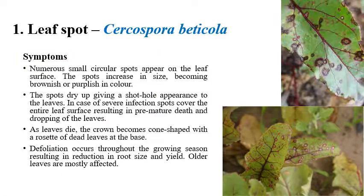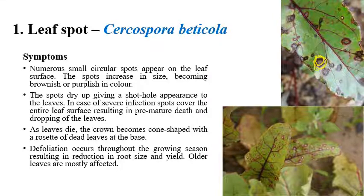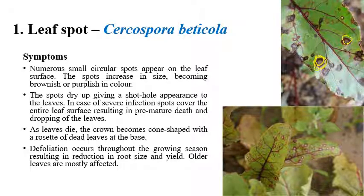The first disease is leaf spot, caused by Cercospora beticola. The name itself indicates leaf spots. Initially, very small spots appear on the leaf. The size of the spots may increase in later stages depending on severity. Initially the spots look brown to purple in color — you can see brown to purple color discolorations or spots on the leaves.